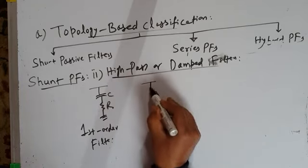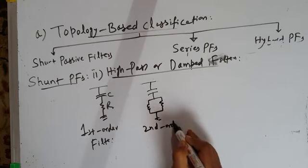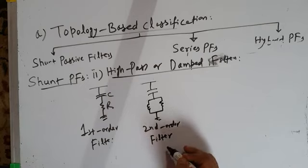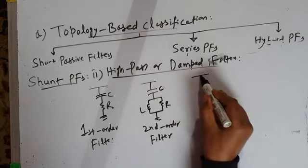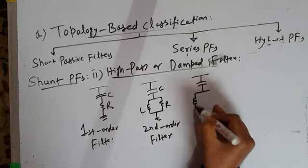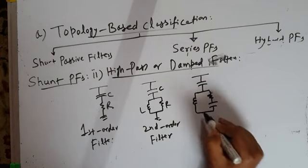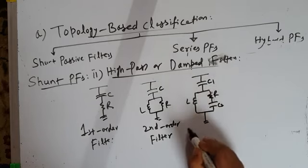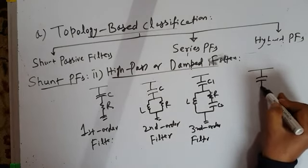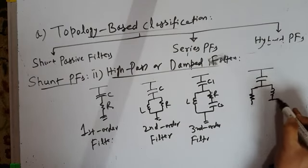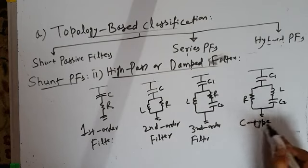A third-order high-pass filter has two capacitors C1, C2, one resistor, and one inductor. A C-type filter consists of a capacitor, then a resistor and inductor in parallel, and another capacitor — components C1, C2, L, and R. These are the different types of high-pass or damped shunt passive filters.